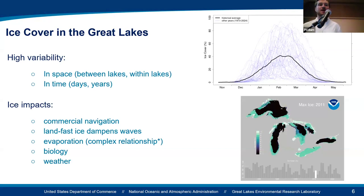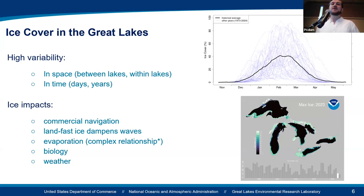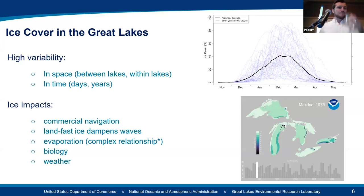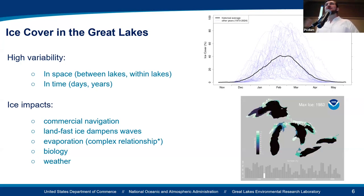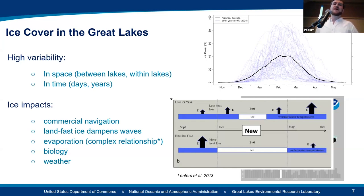Ice cover impacts commercial navigation, which is a huge industry in the Great Lakes. Land-fast ice along the shore dampens waves, so it has a big influence on shoreline erosion, specifically when water levels are high. Ice cover and evaporation have a complicated relationship. It was previously thought that high ice cover automatically meant lower evaporation, but there's a new way of thinking that suggests ice cover more influences the timing of evaporation instead of the total amount, because the lakes are cooling more during a high ice year and while they're cooling, they're evaporating more. Ice cover also influences biology — certain species of fish and microorganisms depend on the ice for reproduction. And of course it influences the weather through thermal regulation and lake-effect snow.